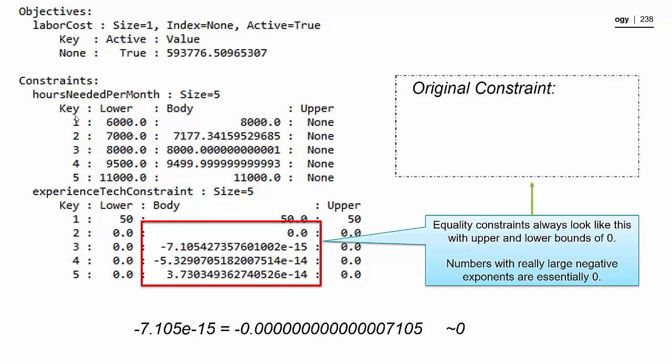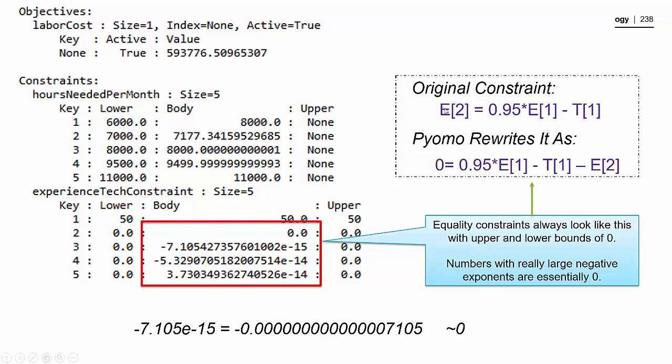So to look at this a little bit more closely, our original constraints for month two says something like this: that the number of experienced technicians in month two is equal to 0.95 times E[1] plus T[1]. And then Pyomo rewrites this constraint as basically moves this e2 over to the other side. So we have no decision variables on one side, and then all the decision variables on the other side. So this is where this zero comes from.